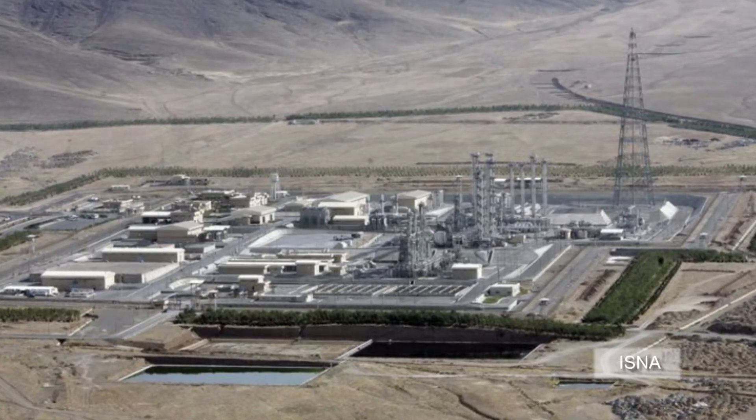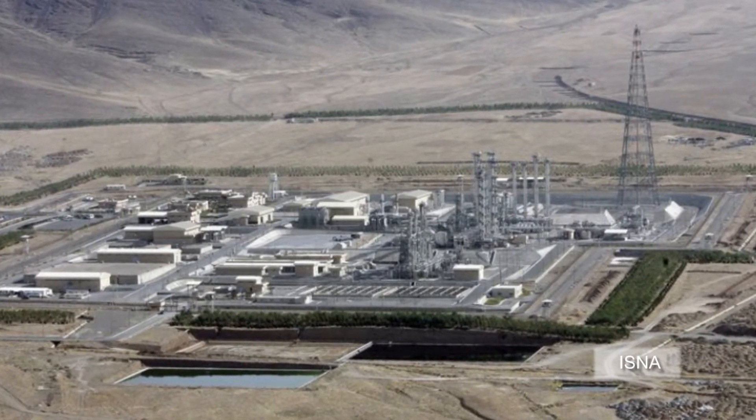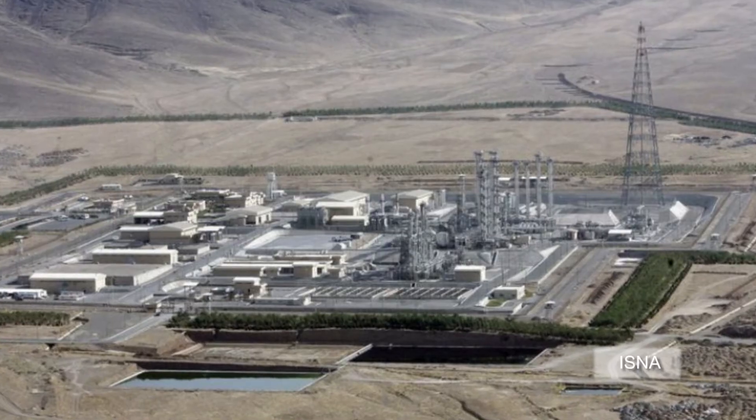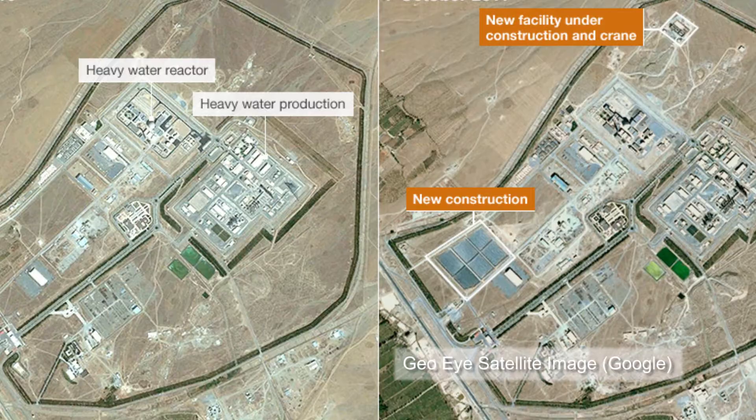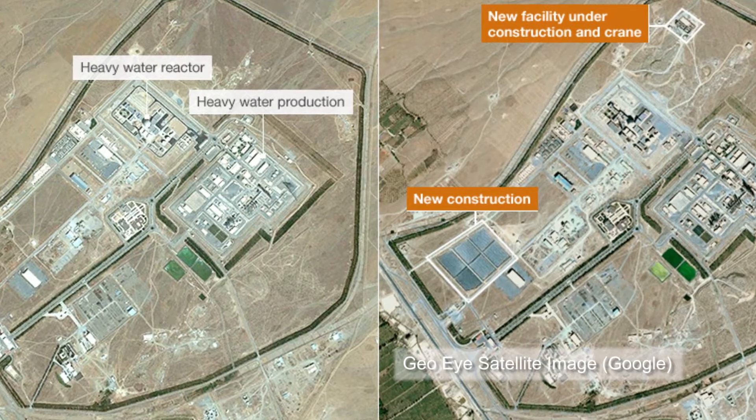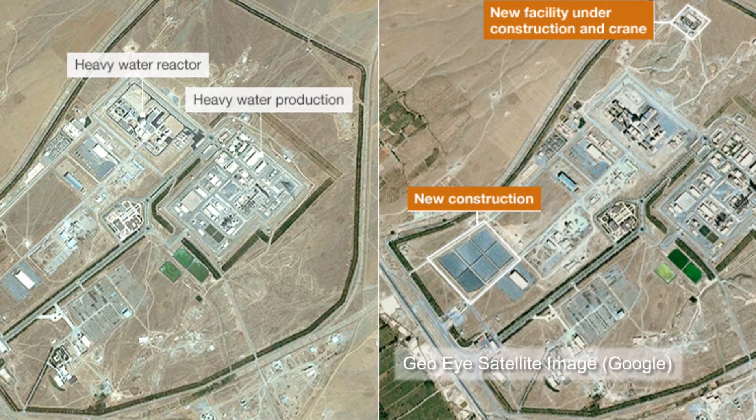Iran's 40-megawatt heavy-water nuclear reactor is set to come online next year. Iran says it needs the reactor to produce isotopes for medical and agricultural use. But critics say it could be used to produce plutonium for weapons.